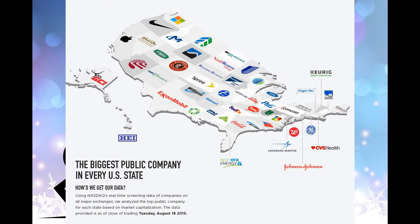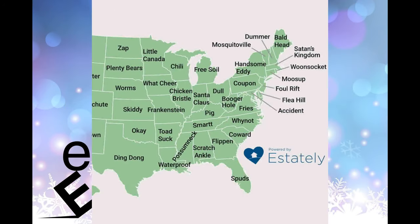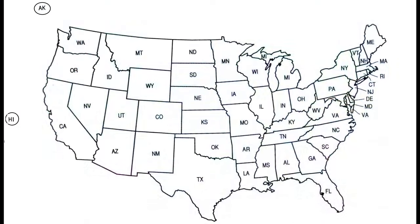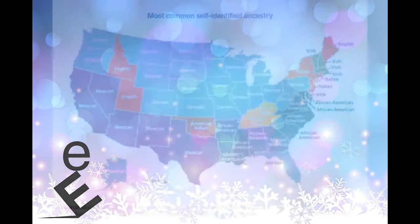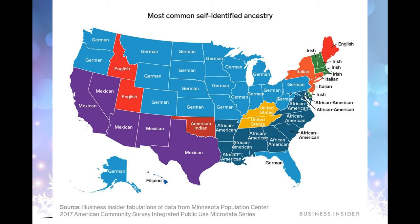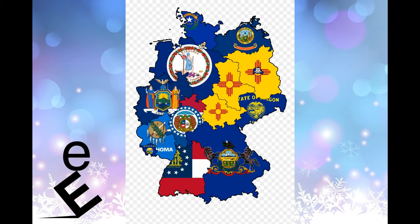There is a continuing debate over states' rights, which concerns the extent and nature of the states' powers and sovereignty in relation to the federal government and the rights of individuals. The Constitution grants to Congress the authority to admit new states into the Union. Since the establishment of the United States in 1776, the number of states has expanded from the original 13 to 50. Each new state has been admitted on an equal footing with the existing states. Alaska and Hawaii are the most recent states admitted, both in 1959.